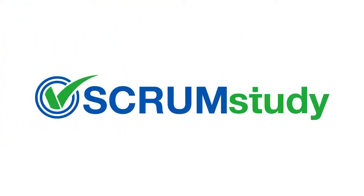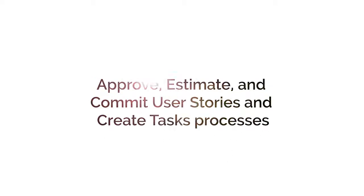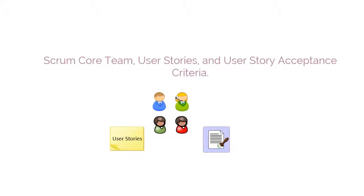Now let's look at the mandatory inputs, tools, and outputs of the Approve, Estimate, and Commit User Stories process. The mandatory inputs are Scrum Core Team, user stories, and user story acceptance criteria. For a detailed explanation of these inputs, please refer to the discussion on these in the Create User Stories process.